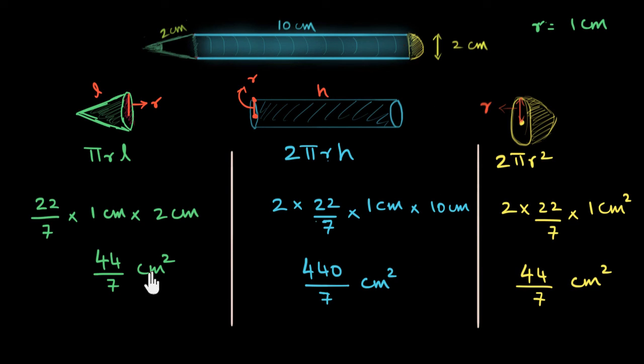So now we have it. Now let's look at this. What is the total area of this going to be? Just the sum of these three. 44 plus 440 plus 44. In other words, 440 plus 88. I'm going to do that in my head, 440 plus 88, that's going to be 440 plus 100 minus 12. So 540, 530, 528. So 528/7 centimeters squared.